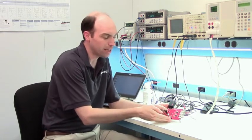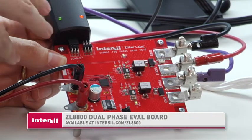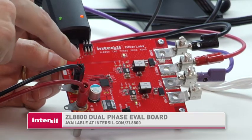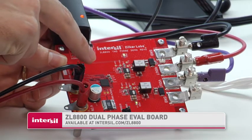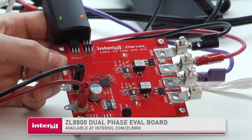So what I have here is the evaluation board of the ZL8800. This is the dual phase board. We have a single ZL8800 IC on this board and we have the two separate channels. Now these are tied together to a single output voltage, so it operates as a dual phase converter.